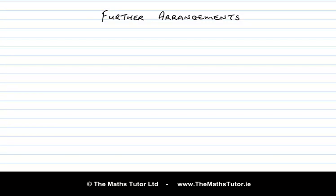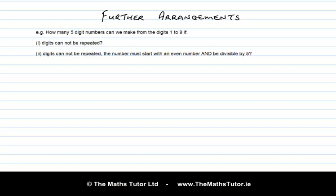Sometimes we are given problems about arrangements which have some special conditions or constraints. For example, how many five digit numbers can we make from the digits 1 to 9 if digits cannot be repeated? Part 2: digits cannot be repeated, the number must start with an even number and be divisible by 5.